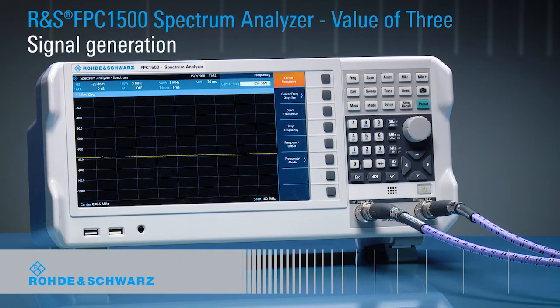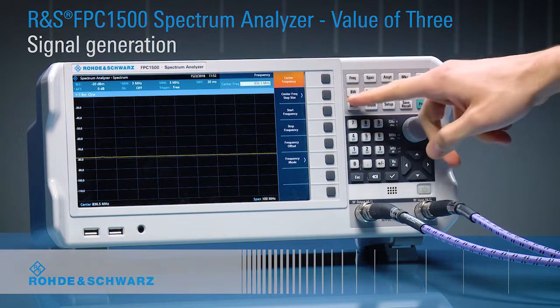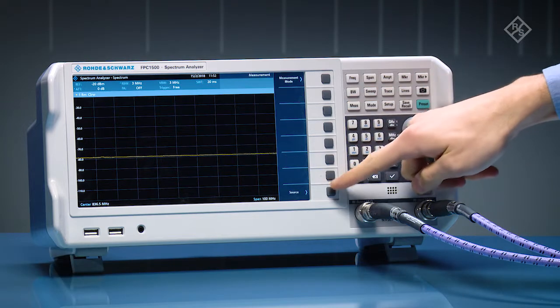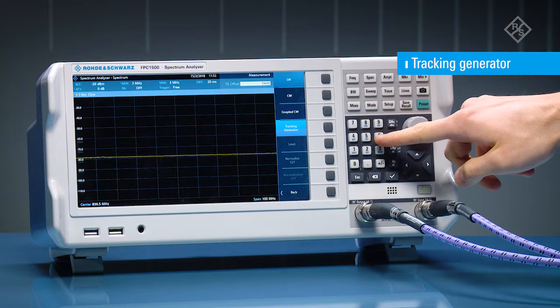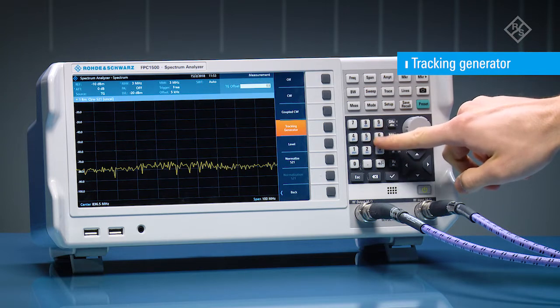The Rohde and Schwarz FPC-1500 features a built-in independent signal source to operate as a signal generator. Spectrum analyzers with an integrated tracking generator can be used to perform scalar S2-1 transmission measurements.